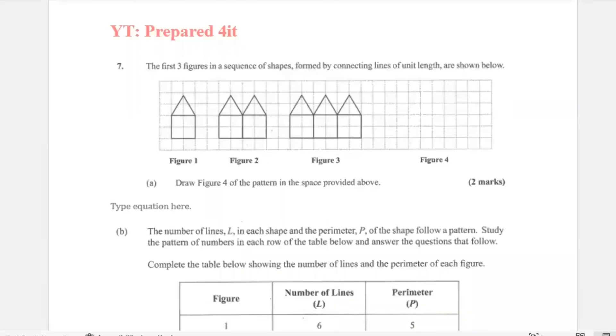The question from June 2021 says the first three figures in a sequence of shapes formed by connecting lines of unit length are shown below. Part a says draw figure four of the pattern. We realize that in each instance, basically one, two, three, four, five lines are added.